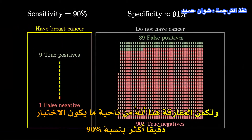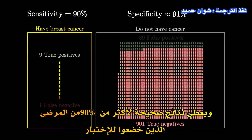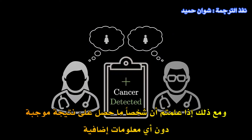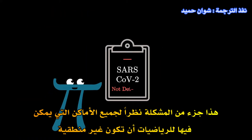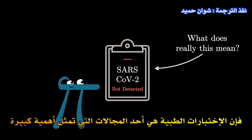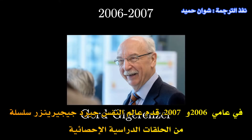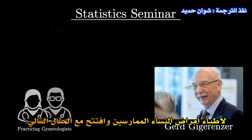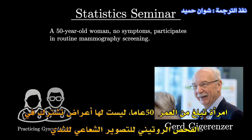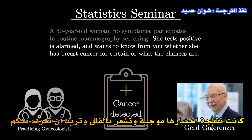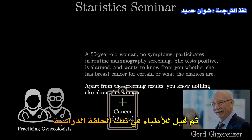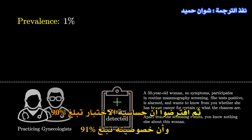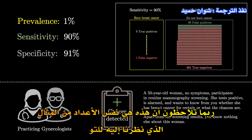So the paradox here is that in one sense the test is over 90% accurate — it gives correct results to over 90% of the patients who take it — and yet, if you learn that someone gets a positive result without any added information, there's actually only a 1 in 11 chance that that particular result is accurate. In 2006 and 2007, the psychologist Gerd Gigerenzer gave a series of statistics seminars to practicing gynecologists, and he opened with the following example: a 50-year-old woman, no symptoms, participates in a routine mammography screening. She tests positive, is alarmed, and wants to know from you whether she has breast cancer for certain, or what her chances are. Apart from the screening result, you know nothing else about this woman.